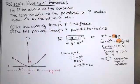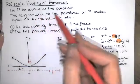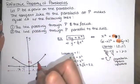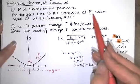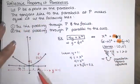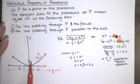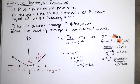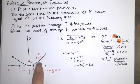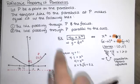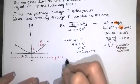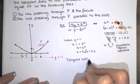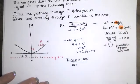Now let's focus on this reflective property and see what it really means. Let P be any point on the parabola — say the point where x equals 2 and y equals 1. That's our point P. The tangent line to the parabola at P makes equal angles with: the line passing through P and the focus, and the line passing through P and parallel to the axis. Let's find the equation of the tangent line so I can sketch it.